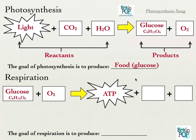Respiration also produces two waste products. One is CO2 — carbon dioxide. And the other is water. So the equation for respiration is: glucose plus oxygen produces ATP, which is the energy, plus water and carbon dioxide.